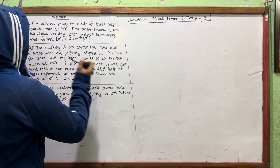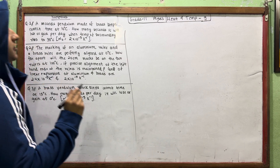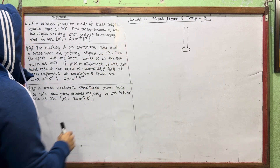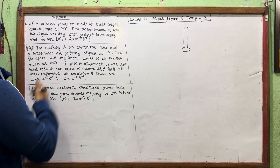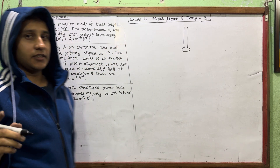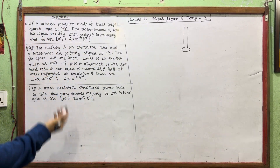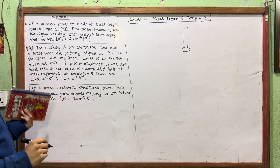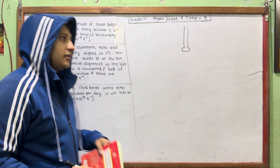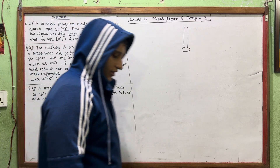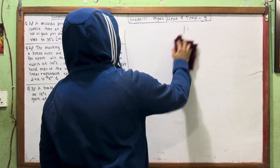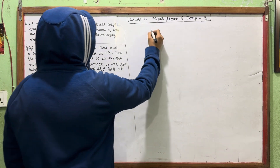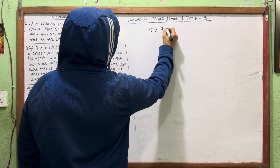First, I will show you the setup. There is a pendulum. The pendulum is the same at 10 degrees Celsius — it gives correct time. When the temperature is higher, the time period changes, so there is a gain or loss. The main formula: the time period is T = 2π√(L/G).